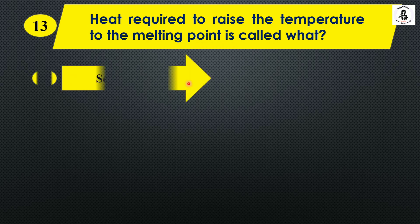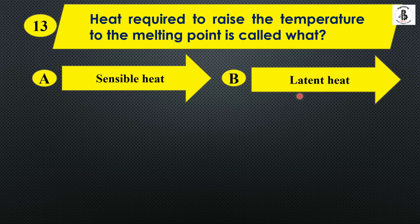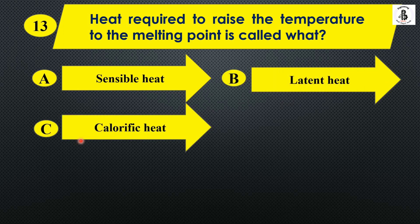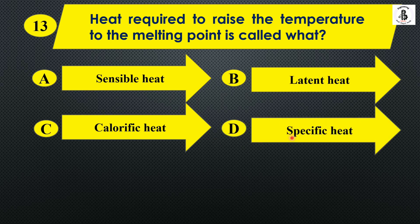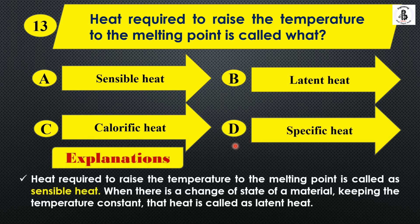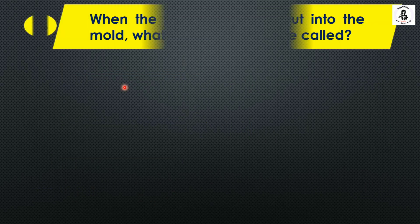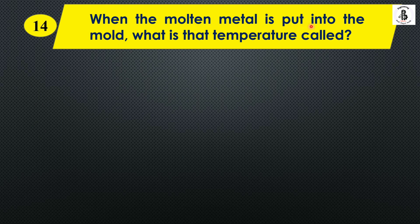Question thirteen: The heat required to raise the temperature to the melting point is called what? Option A: Sensible heat, Option B: Latent heat, Option C: Calorific heat, Option D: Specific heat. The heat required to raise the temperature to the melting point is known as sensible heat. When there is a change of state of material keeping the temperature constant, that heat is called latent heat. The answer here is Option A: Sensible heat.